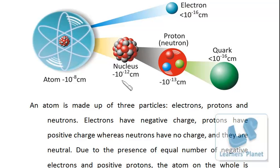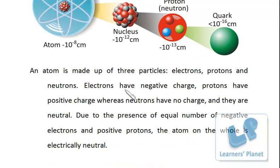Here I have given the idea of the size of the atom, nucleus, proton, and electron. As already discussed, the atom is made up of three particles: electrons, protons, and neutrons. Electrons have a negative charge, protons have a positive charge, and due to the presence of equal numbers of negative electrons and positive protons, the atom on the whole is electrically neutral.